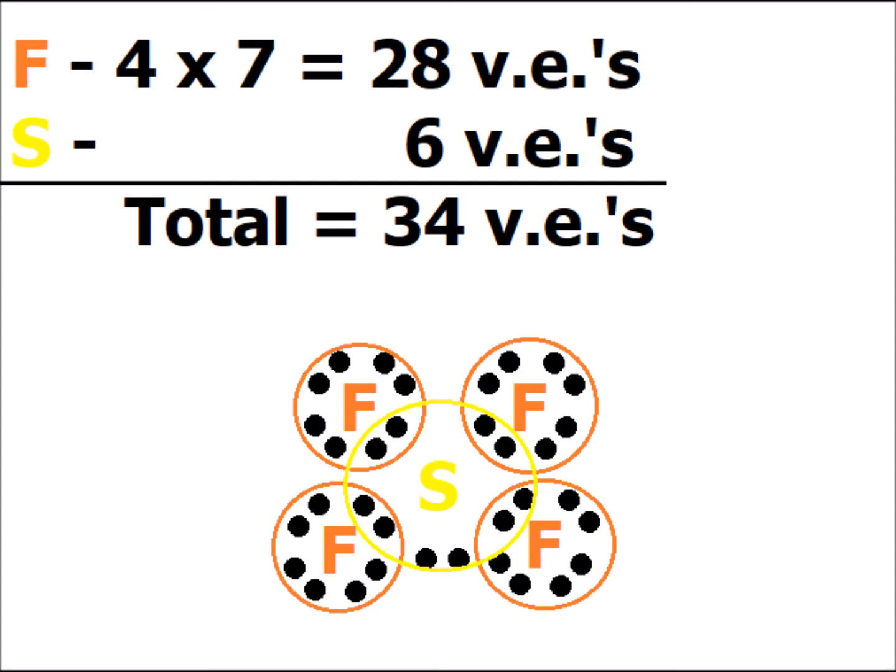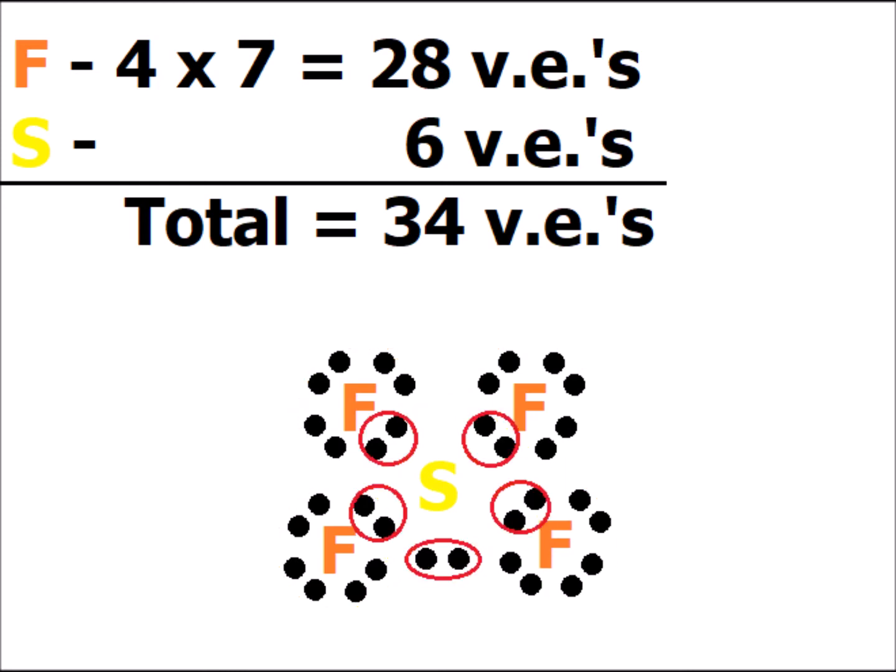If we are in the first or second rows of the periodic table, we can never exceed eight electrons — we can never expand beyond the octet rule. This gives us a total of 5 electron pairs around the central sulfur atom: four of which are bonding pairs involved in bonding with fluorine, and one of which is a lone pair entirely on sulfur, giving us 5 electron domains.